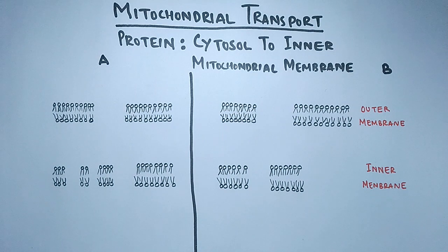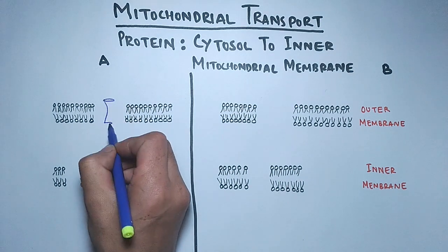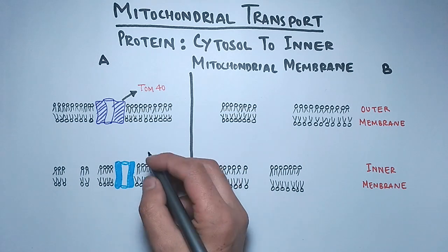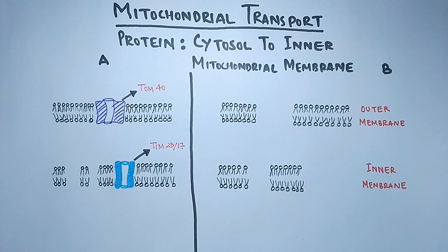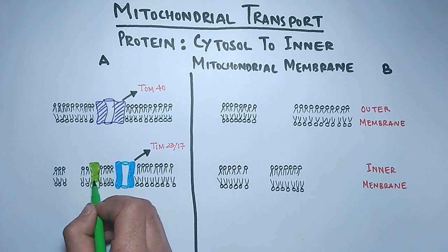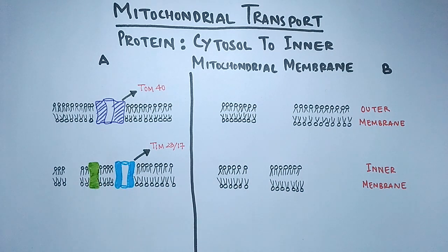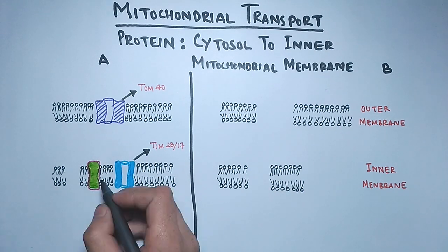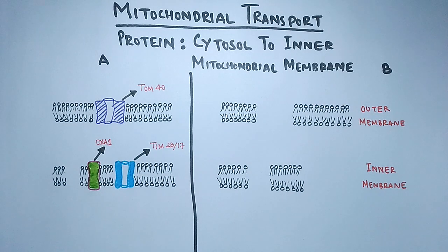In Pathway A, a channel pore called TOM40 is present in the outer membrane of mitochondria. In the inner membrane there is a TIM23/17 complex, which forms the protein pore — that's the translocon of the inner membrane. Apart from these translocons, there is another protein in the inner membrane called OXA1, which acts as an insertase — it inserts proteins from the mitochondrial matrix into the inner mitochondrial membrane.